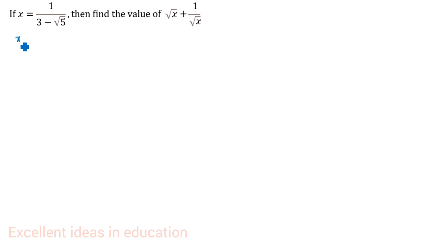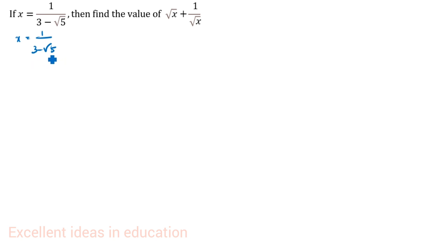The given question is x is equal to 1 by 3 minus root 5. You see the denominator is given as 3 minus root 5. We will rationalize the denominator.